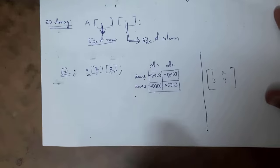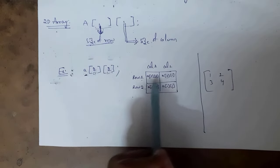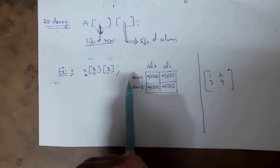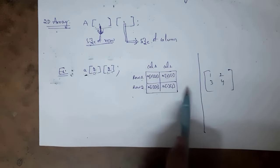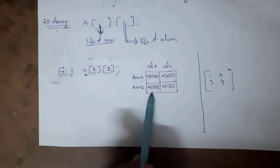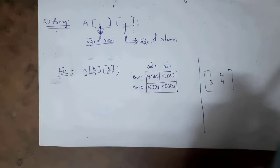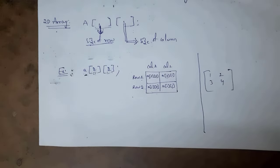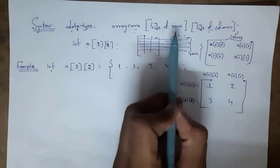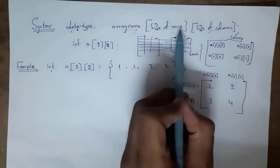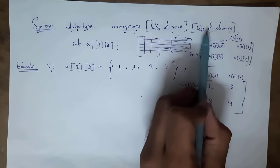For example, if I declare a[2][2], it will create 2 rows and 2 columns, where I can store 4 elements (2×2 = 4). A two-dimensional array looks the same as a matrix, so we can also call it a matrix. The syntax is: data type, array name, [size of rows][size of columns]. Example: int a[2][2].